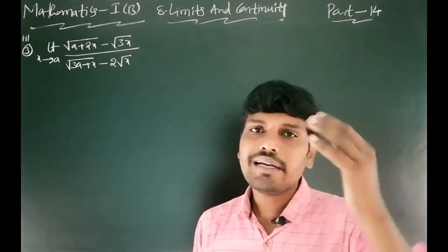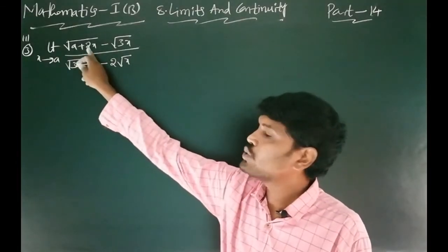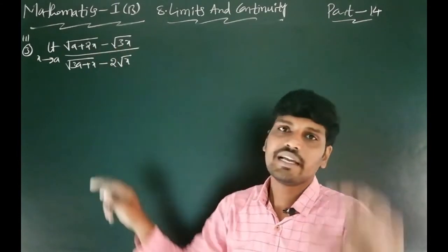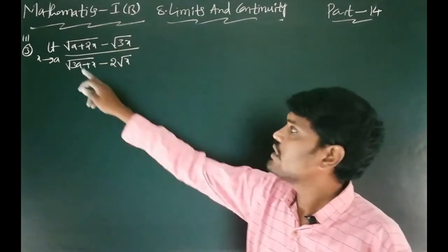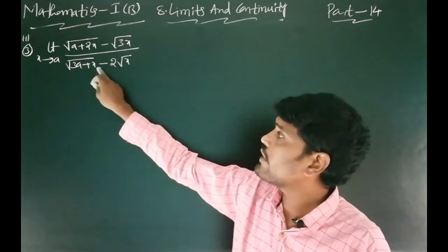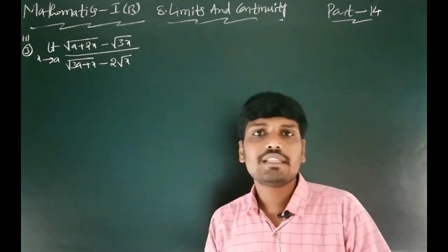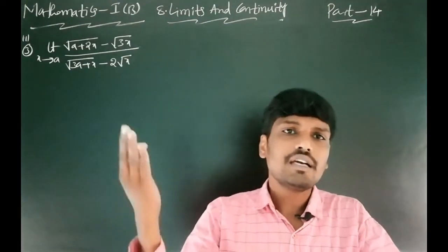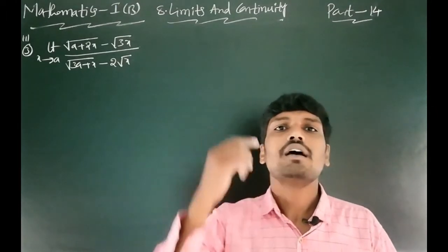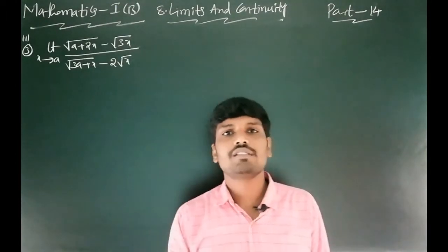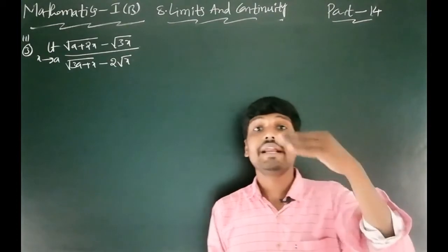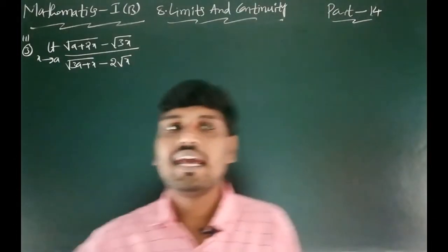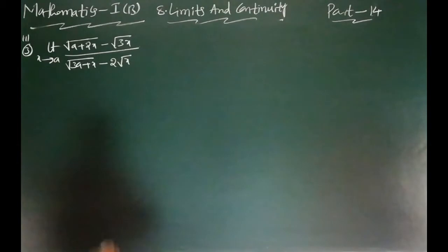You can apply the direct limit here. Substituting x = a: numerator gives √(a+2a) - √(3a) = √(3a) - √(3a) = 0. Denominator gives √(3a+a) - 2√a = √(4a) - 2√a = 2√a - 2√a = 0. So we get 0/0, which is an indeterminate form. That's why we rationalize the numerator and denominator.